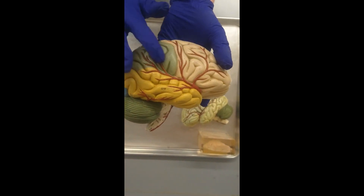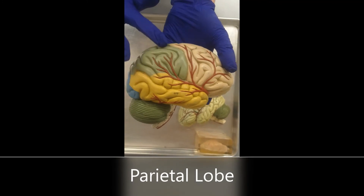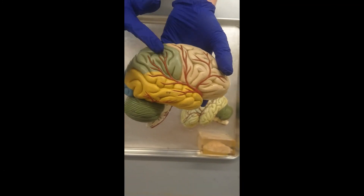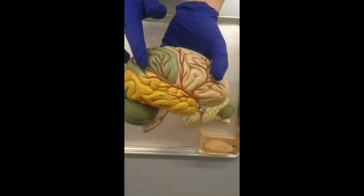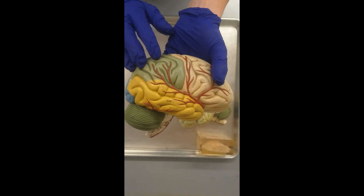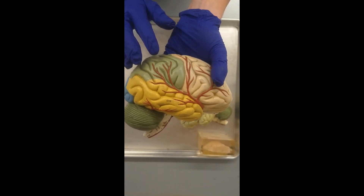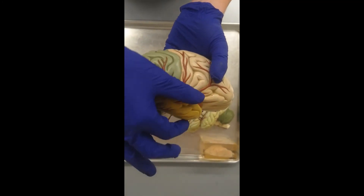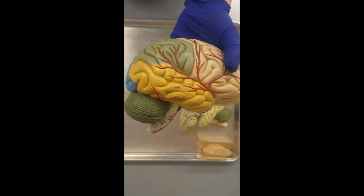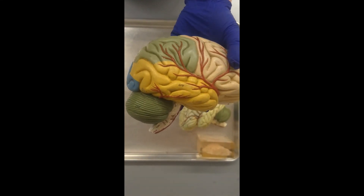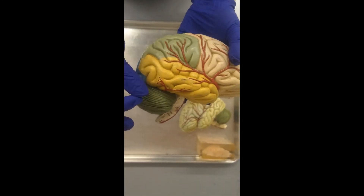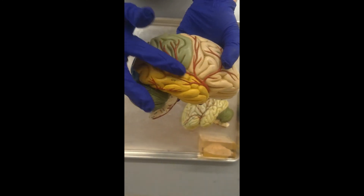We have the parietal lobe — it's the green one right here, color-coded for you guys. Not actually green in the brain, just color-coded here. The parietal lobe is going to have a lot of somatosensory relay going on. Then there's the temporal lobe — think about that word and maybe when we went over bones of the skull. What bone was there and what sensory structure was associated with that lobe?